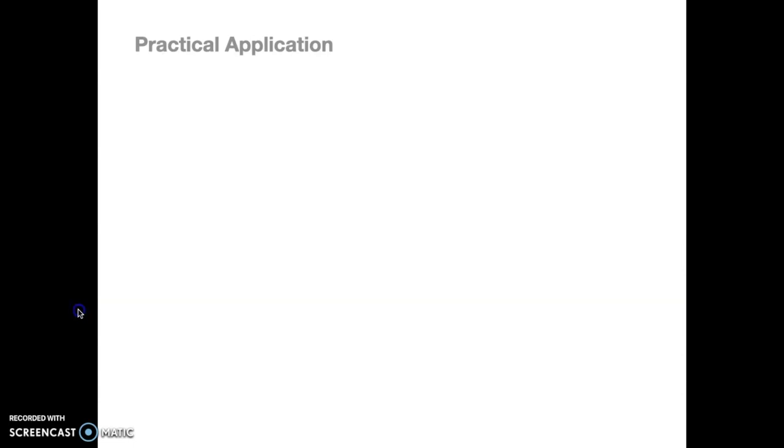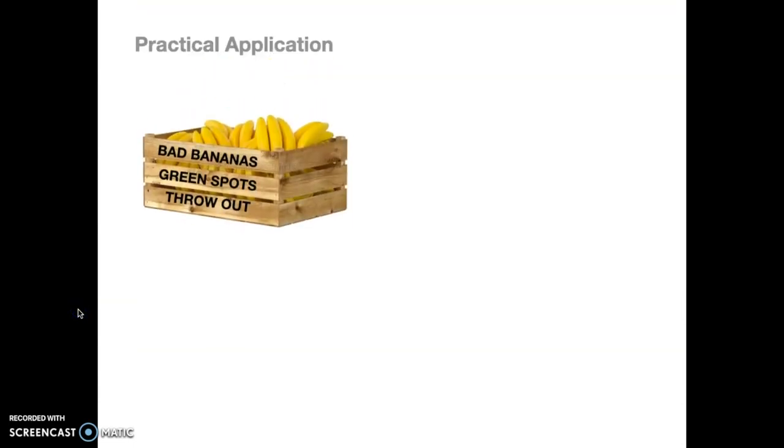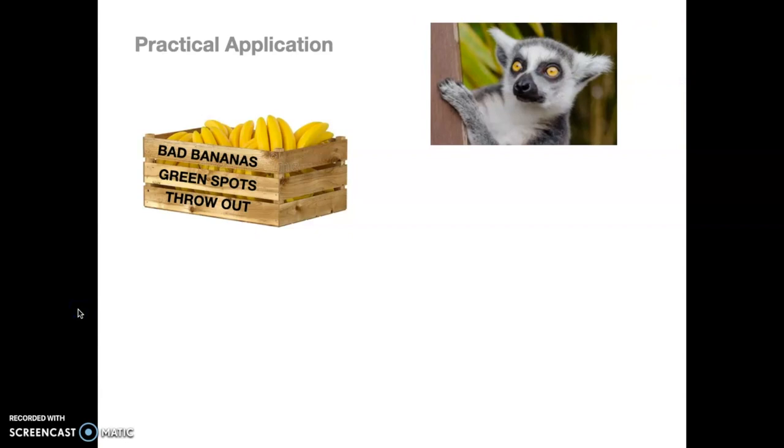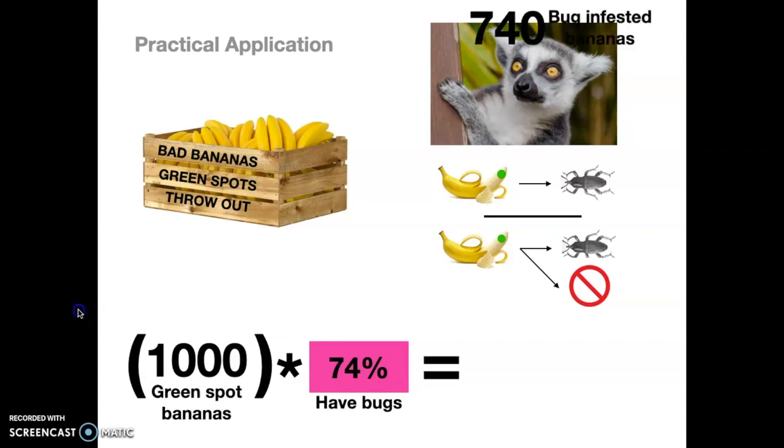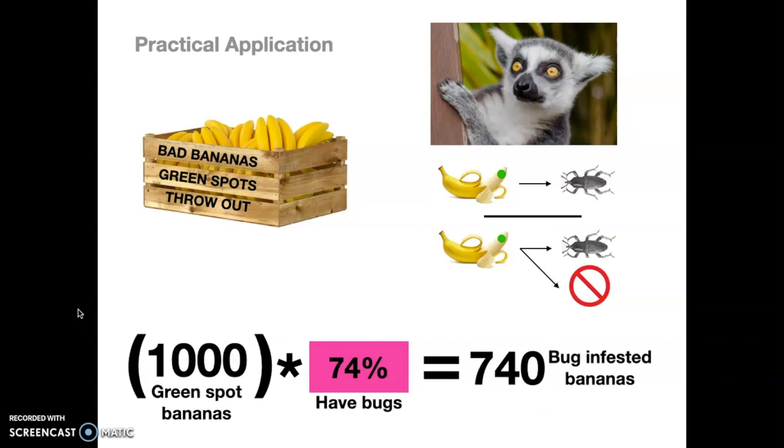Let's talk about this in terms of practical applications. You have a crate of bananas there. They all have green spots on them and they're labeled throw out bad bananas. But you're an intrepid, interested, curious lemur. So you're going to use this Bayesian thinking that we just went through. And you're going to divide the base case of that green spot and the beetle by both cases and see what happens and what is really going on inside of that crate. Besides, just throw them all out. So let's say there's a thousand green spot bananas. You're going to multiply them by 74% have bugs, which we had calculated earlier. And that equals 740 bug-infested bananas out of that thousand.